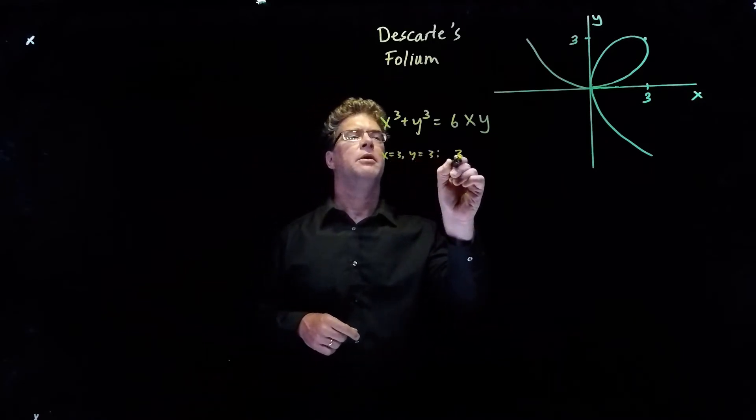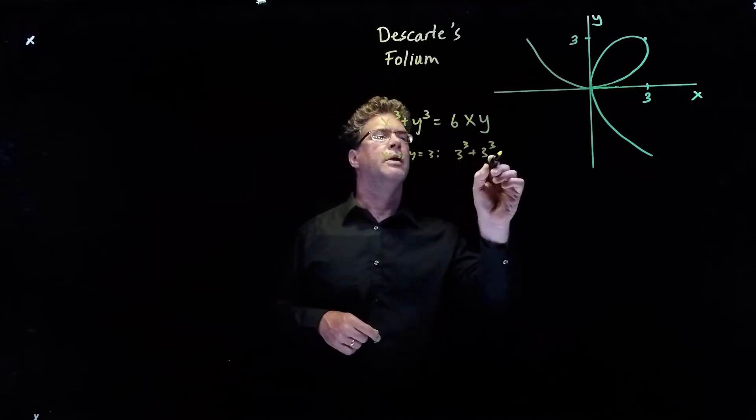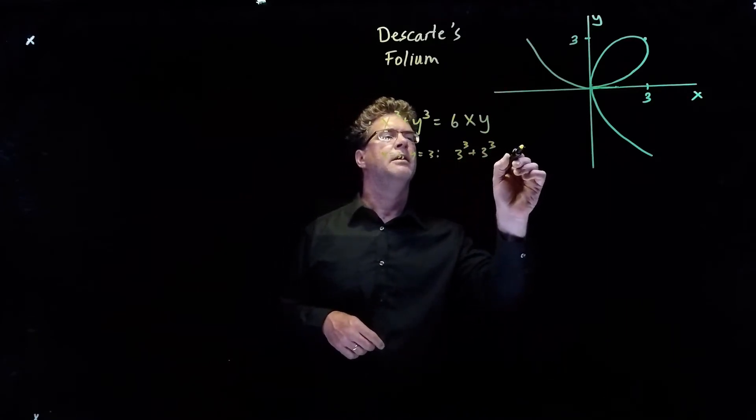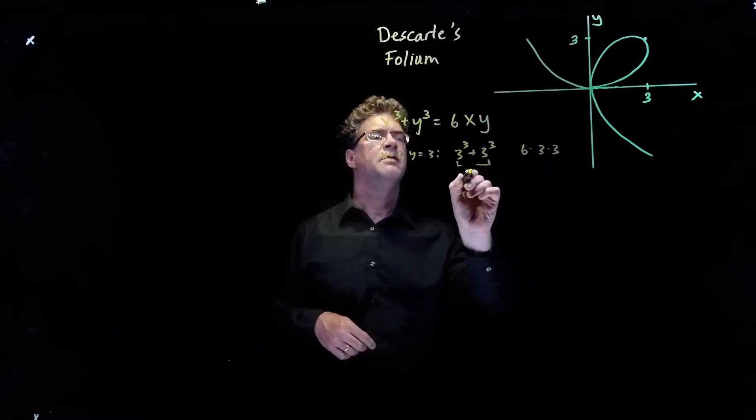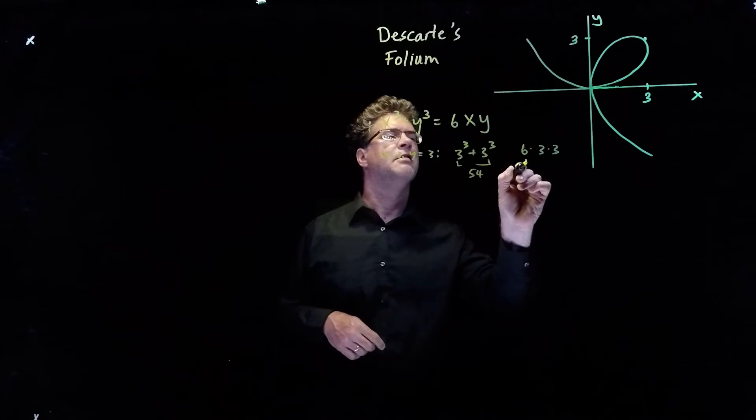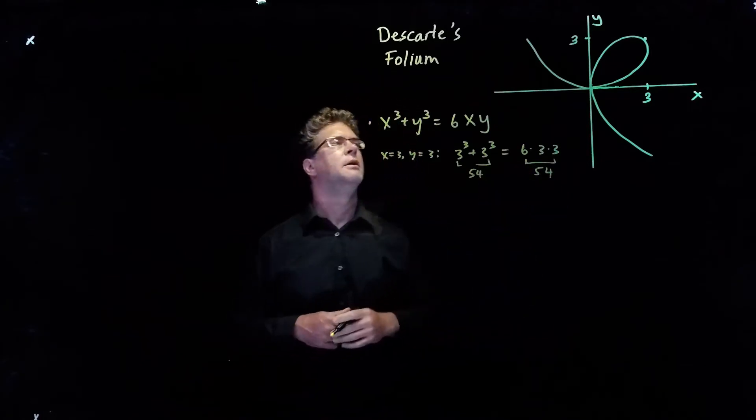then we have 3 cubed plus 3 cubed on the left-hand side, and we have 6 times 3 times 3. So this is 54, and this is also 54. So we're good.